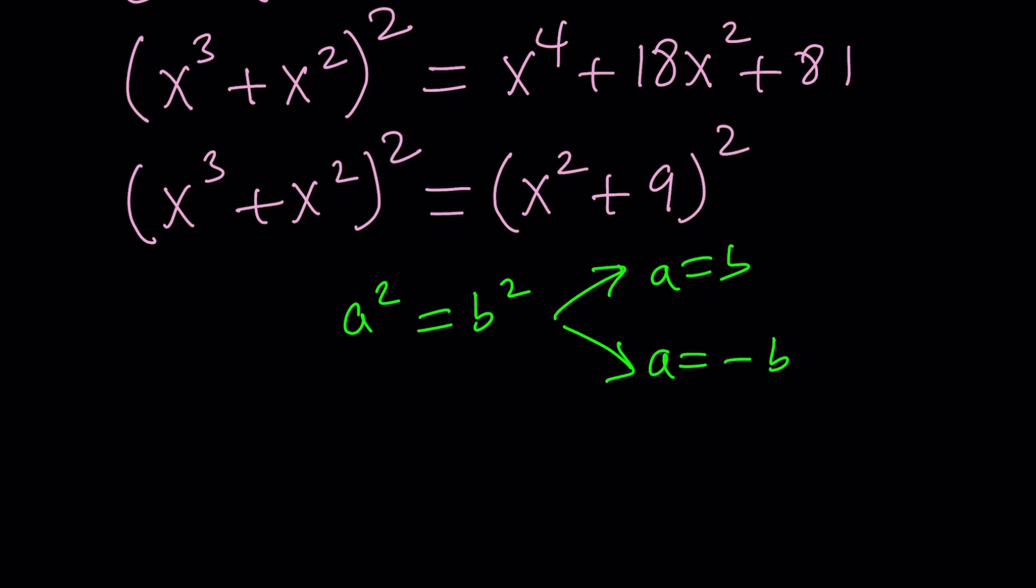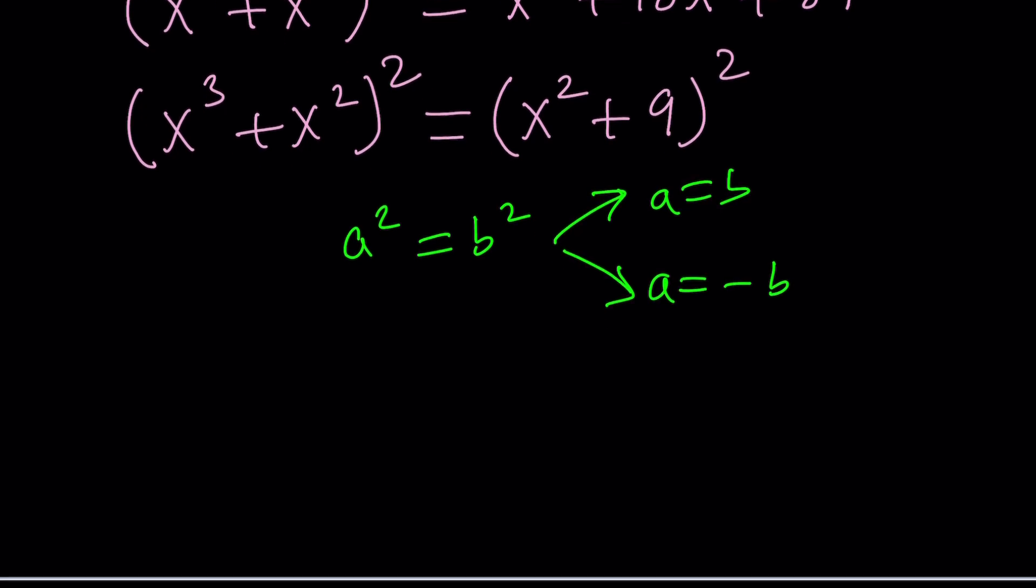Now, you can also subtract this right-hand side expression from both sides and turn into a difference of two squares, like dots, but that's unnecessary and that's too much work. For lazy people, this is the way to go. So, now we have the following. Option one.